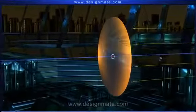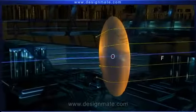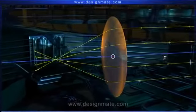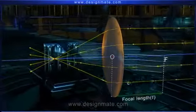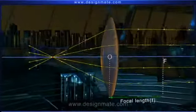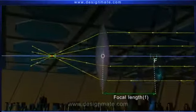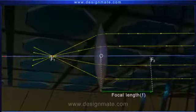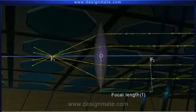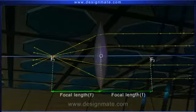Rays parallel to the principal axis incident on this lens from the other side have the same effect on light. Therefore, a convex lens has two focal points, usually represented by F1 and F2, one on each side equidistant from the optical center.